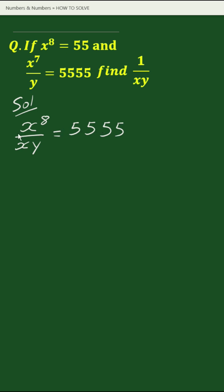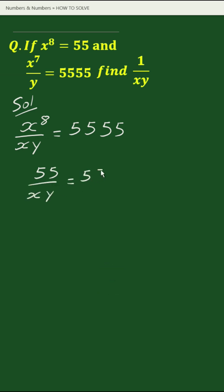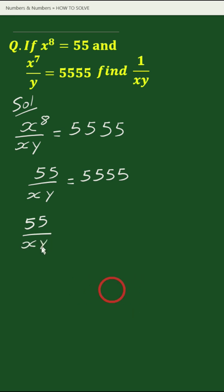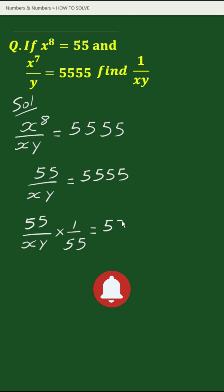Now, substituting the value of x to the power 8, this can be written as 55 by xy equals 5555. Now, multiplying both sides by 1 by 55, we can write this as 55 by xy times 1 by 55 equals 5555 times 1 by 55.